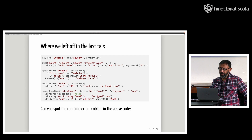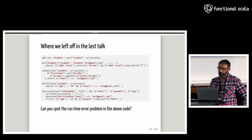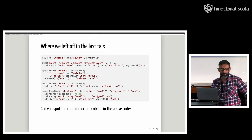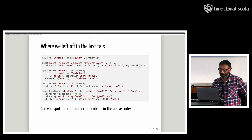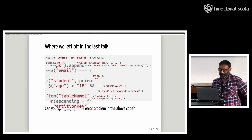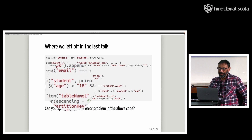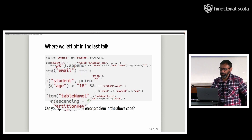Here's a code example with a deliberate mistake that will fail at runtime. Can you spot it? The error is that we're comparing a numeric age field to a string value, and this is pretty hard to spot. We have no help from the compiler here.